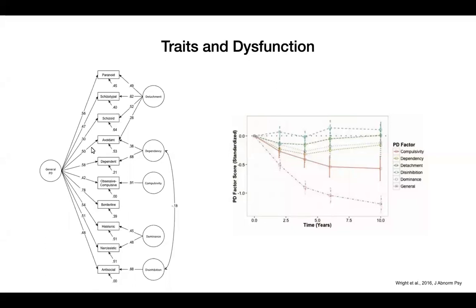All these coefficients are large enough to suggest the different ostensible disorders share a lot of common variance, represented in the general PD factor. One subtlety: the borderline coefficient is quite a bit bigger than the rest, suggesting there's something about borderline that's more general than the others. Once you take this general factor out in a bifactor framework, you're left with residuals. Five factors tended to explain them fairly well — you didn't need one for borderline because most of its reliable variance is sucked up by the general factor. What remains looks a bit like the Big Five: disinhibition, compulsivity, social dominance, detachment, and dependency.